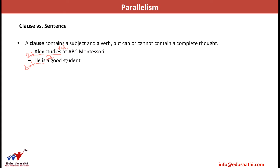But the problem is that if I just say 'he is a good student,' it does not signify anything on its own. This 'he' can have multiple dimensions — it could refer to Alex or to another person like Bob. It does not have any complete thought. Thus a clause may have a complete thought or it might not.